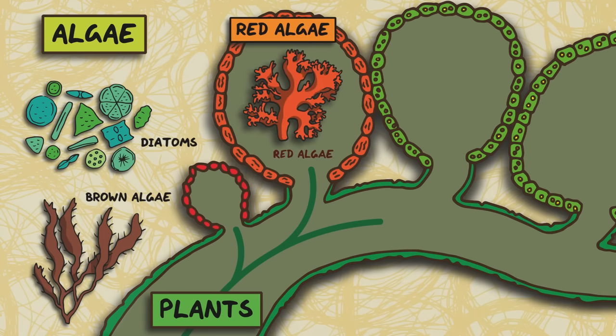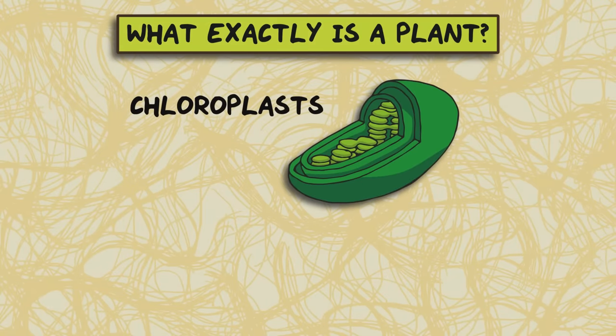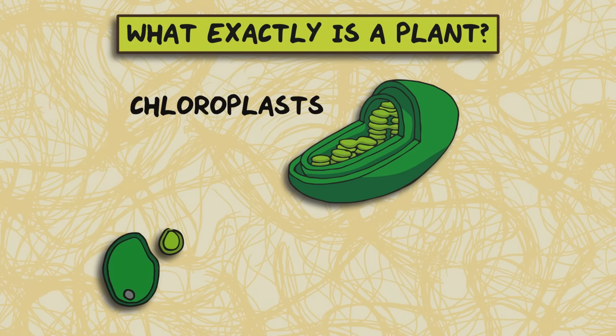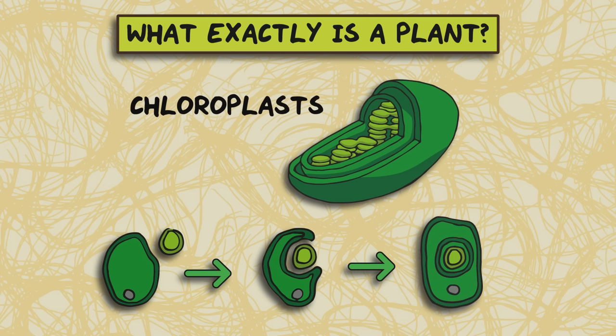Red algae are the first big group of species considered to be in the plant kingdom under the current taxonomy, containing about 6,000 species. So what exactly is a plant? Technically it's based on looking at a part of the cells called chloroplasts which do the photosynthesis. In plants these chloroplasts are surrounded by two membranes, which scientists think came from an ancient event where one cell ate another but the cell that got eaten didn't die.